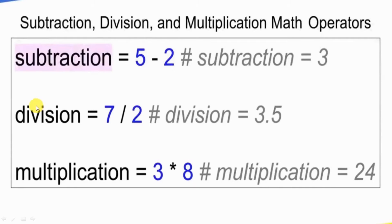Next is the division operator. If we use division, we will use slash. Divide the number — division is equal to 7 by 2. If we have a floor division and we divide the number, we will use a float value. That is decimal. Now, 7 by 2 is equal to 3.5.